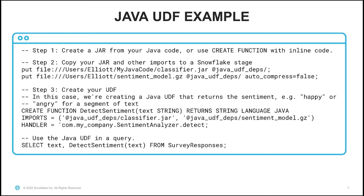Once we've created our Java UDF, now we can use it in a query. In this case, I'm selecting text and calling my detect_sentiment function on the text, selecting from a table named survey_responses. This will return the text as well as the sentiment for each input from the survey responses.